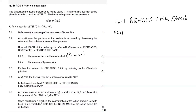Question 6.2.2 asks what will happen to the number of I₂ molecules. We compare coefficient ratios: on the reactant side the coefficient is 1 (one gas mole), and on the product side it is 2 (two gas moles). An increase in pressure favors the side that produces fewer gas moles — the reactant side — so the reverse reaction is favored and the number of I₂ molecules increases.